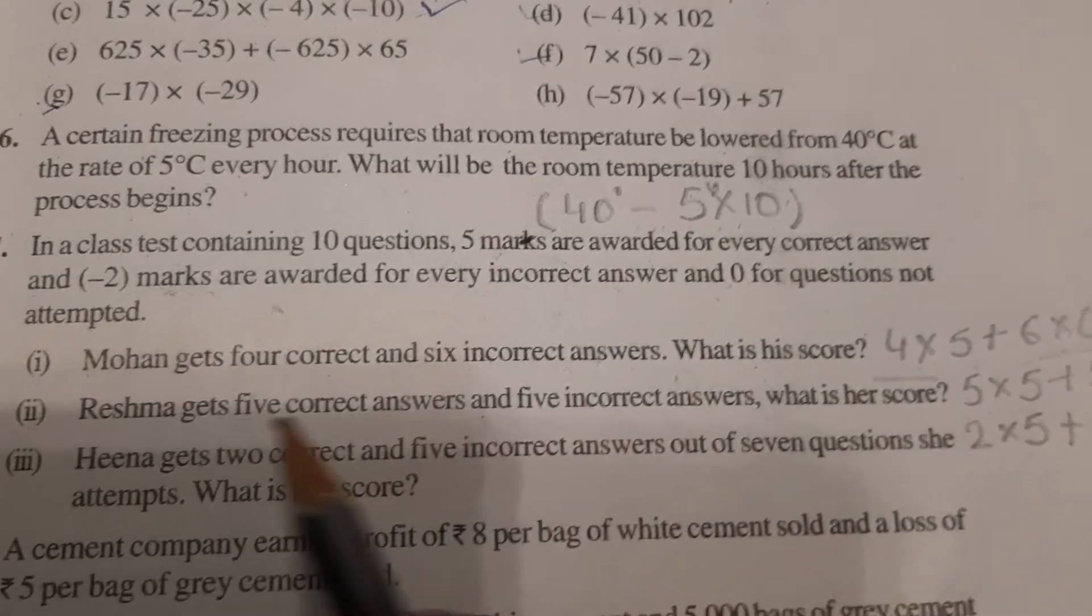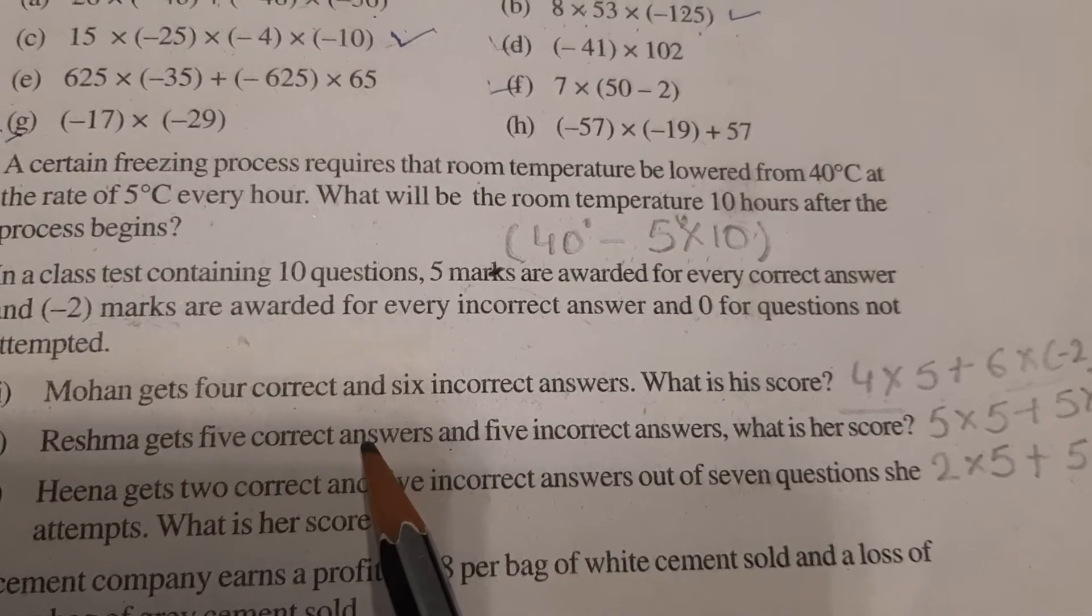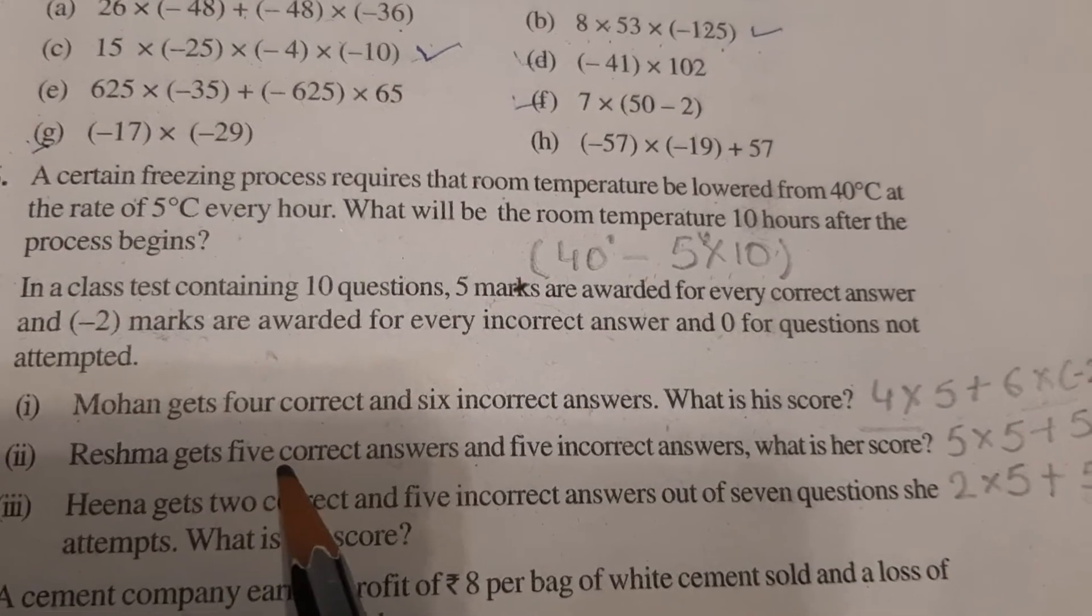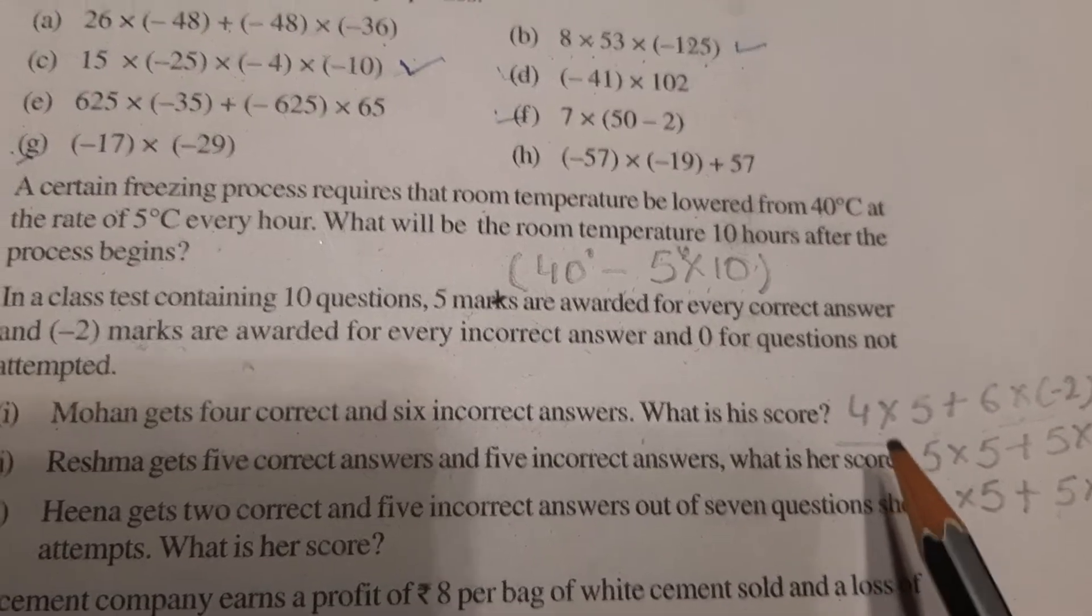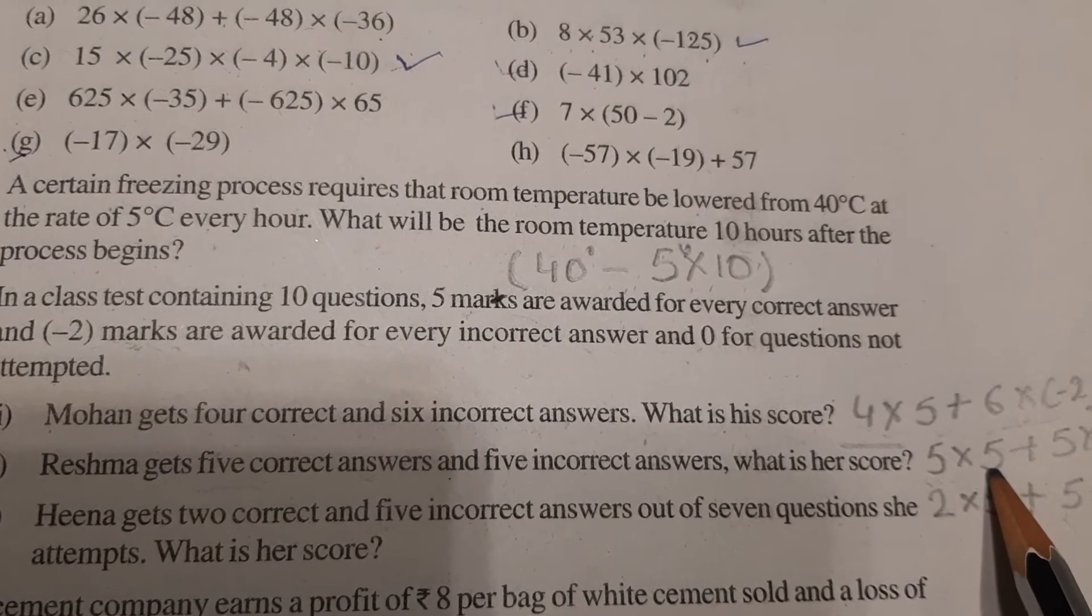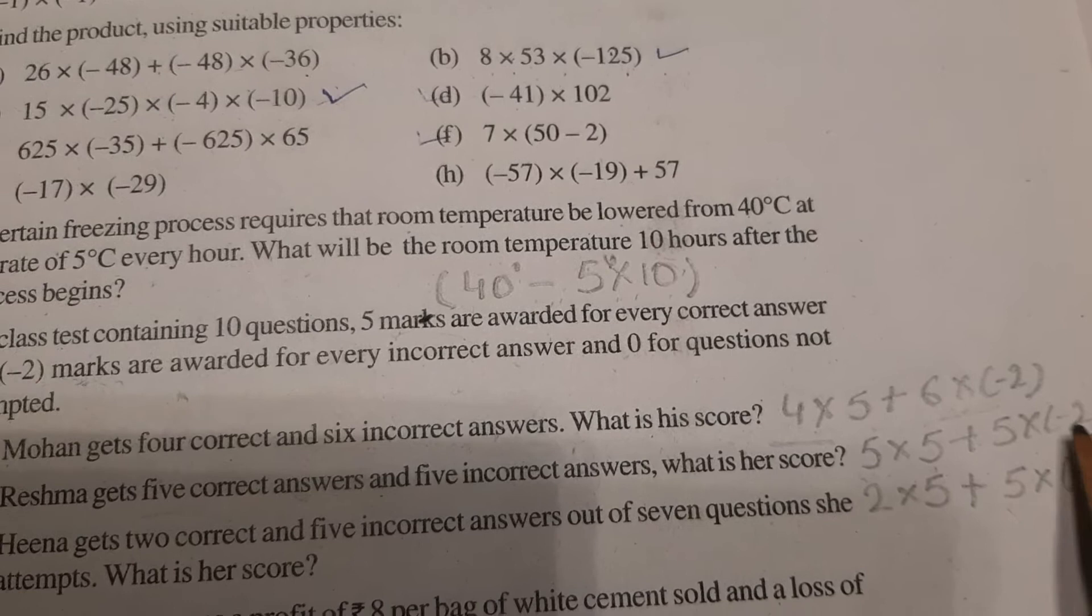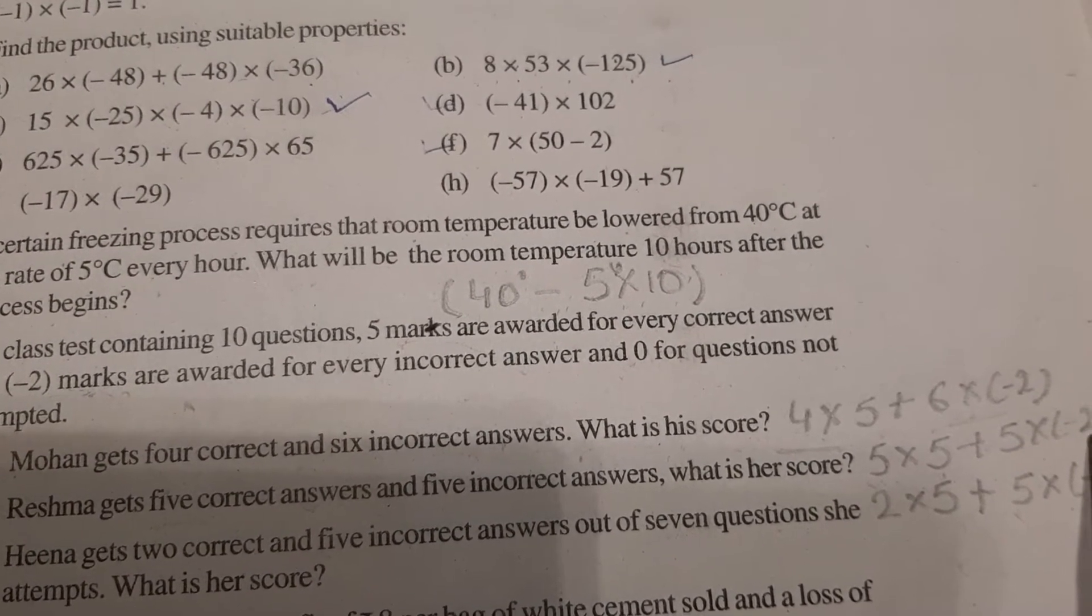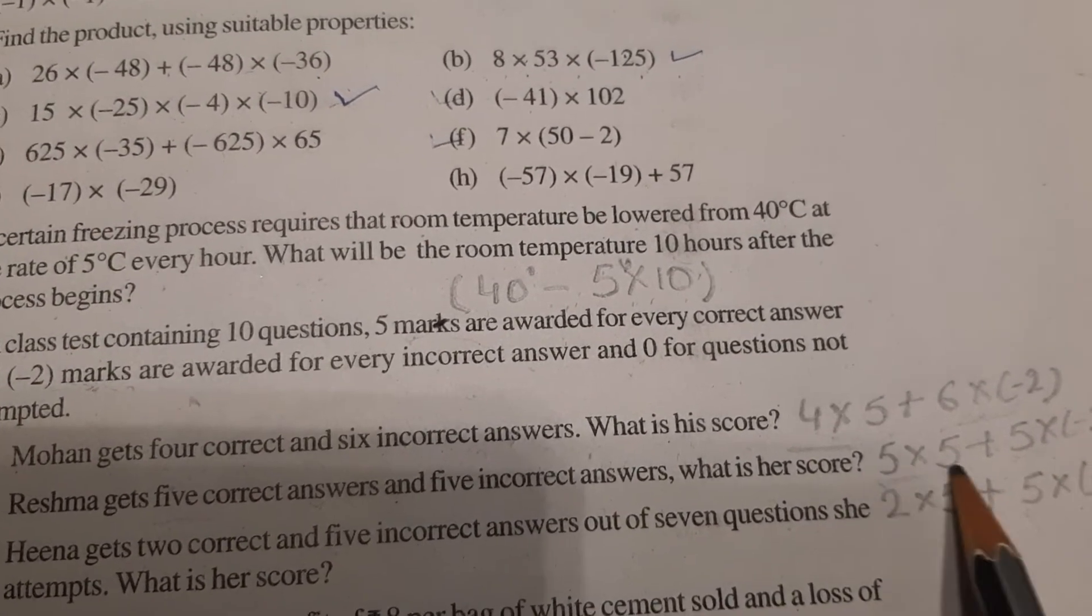Similarly, next student Reshma gets 5 correct answers and 5 incorrect answers, so it means she attempted all. 5 correct, 5 incorrect, total 10. So we will frame the equation. 5 correct means 5 into 5 for correct answers. Now 5 incorrect, plus 5 into minus 2 because number of questions 5 and marks for these incorrect answers minus 2. So total score we will find after solving this.